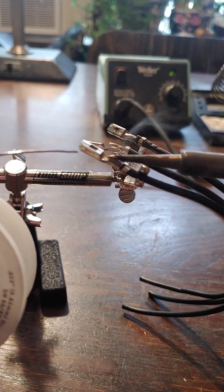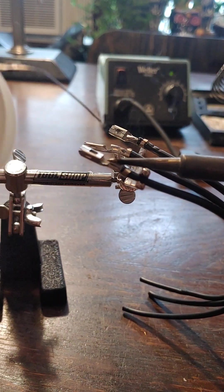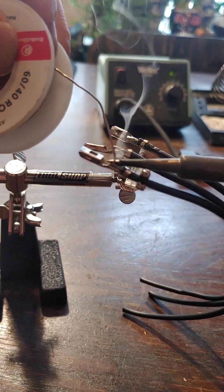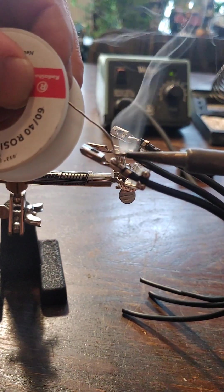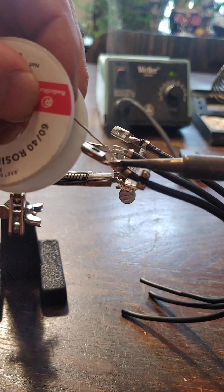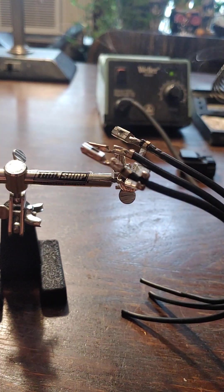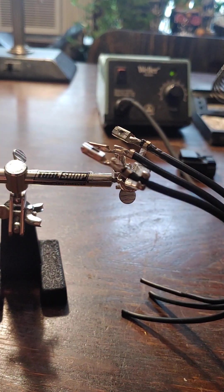I'm also using rosin core solder, but I find that I need to use a little flux to help this process go along for me. So I heat it up for a minute and then I just bring my solder in here and kind of fill up the gap there. Let everything cover over and we're good. Voila.